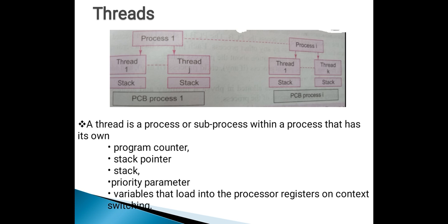Now we are moving on to the next concept: thread. Embedded software can be said to consist of a number of threads or a number of processes and threads. This figure shows n number of processes, each having k number of threads. Considering a single process, say process 1, it will have j number of threads. Each thread will have its own program counter, stack pointer, stack, priority parameter, and the variables that load into the processor registers on context switching.